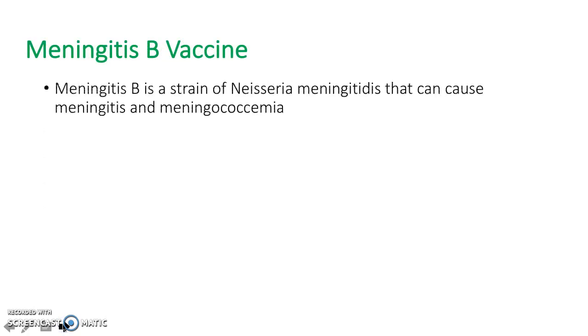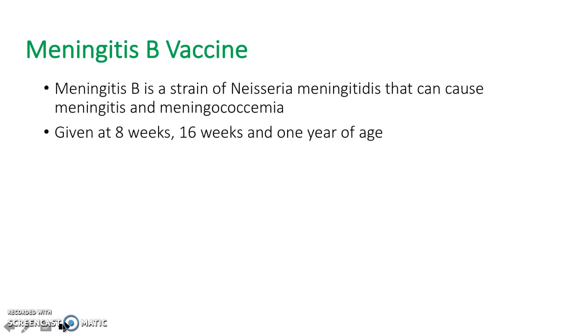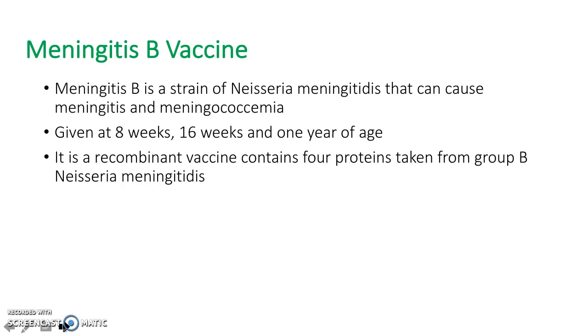Meningitis B can cause severe meningitis and sepsis. The vaccine to prevent this is given at 8 weeks, 16 weeks and 1 year of age, and it is injected into the thigh.